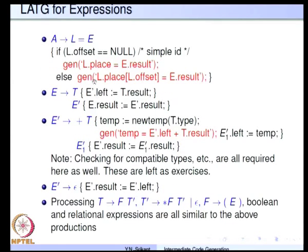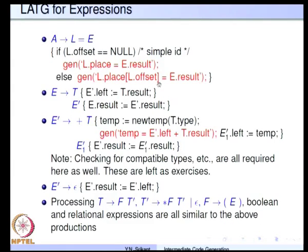Now let us continue with expressions. For the assignment A → L = E, the code generation scheme is the same as before: if it is a simple id we generate L.place = E.result, and if it is an array expression we generate L.place[L.offset] = E.result.